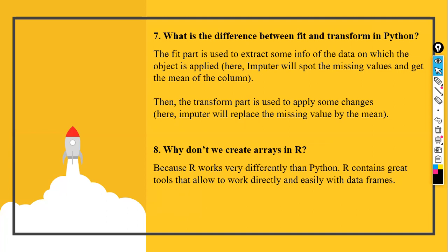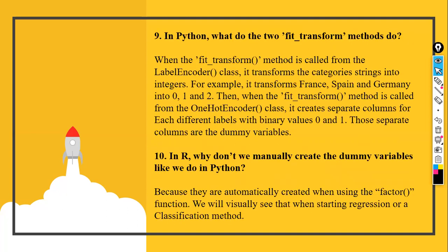Why don't we create arrays in R? This is because R Studio is made directly or indirectly for statistics. It works great for general statistics and basic mathematics. R can very easily work with data frames natively, unlike Python. In Python, the fit and transform methods are separate, but we've already covered those — here we're talking about fit_transform as a single combined functionality.